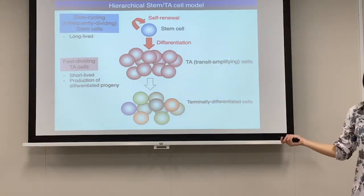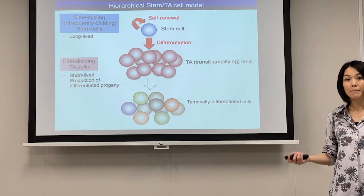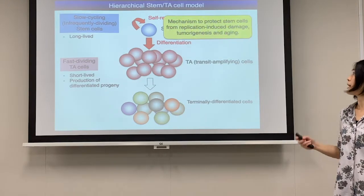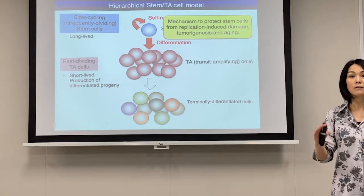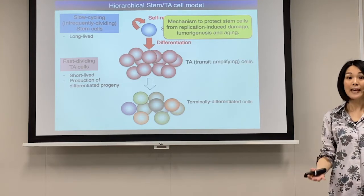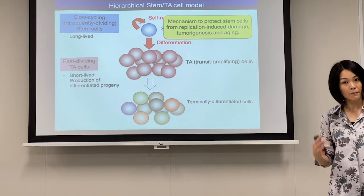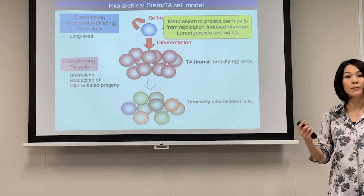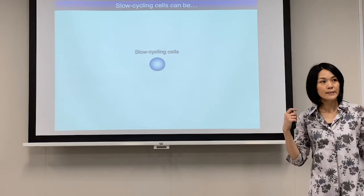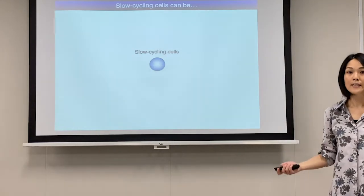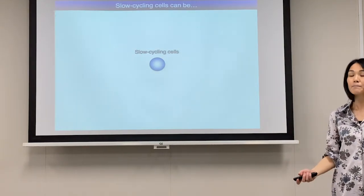This model is known as the hierarchical stem-TA model, and it is considered to be a mechanism to protect stem cells from replication-induced DNA damage, telomere shortening, and thereby from tumor genesis or aging.